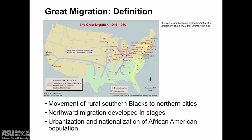Let's take a look at a definition of the Great Migration. The Great Migration was the movement of rural southern blacks to northern cities. It was a response to political, economic, and social conditions in the South. The northward migrations developed in stages. These migrants were not necessarily farmers — half of them were migrating from cities and towns in the South. This Great Migration began the urbanization and nationalization of the African American population.